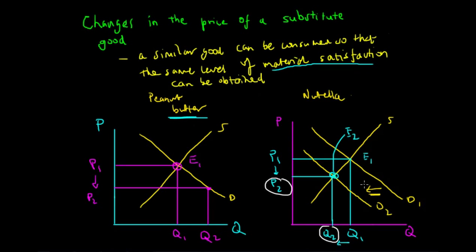As producers recognise this surplus in production — where supply exceeds demand — they will start to lower prices to get rid of all their excess stock. As there is a contraction in supply and price decreases, consumers will respond by expanding their demand, and the new equilibrium point at E2 will be reached. This is how supply and demand analysis can be applied to show how changes in the price of a substitute good can affect certain markets.